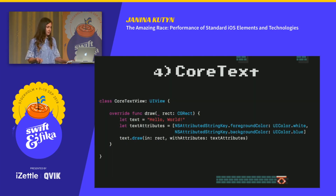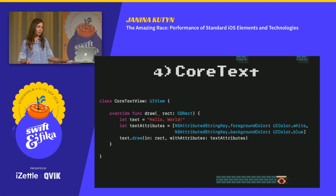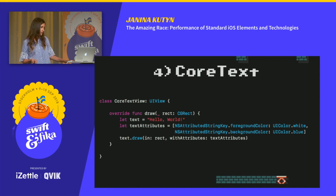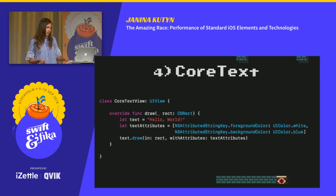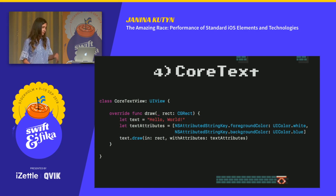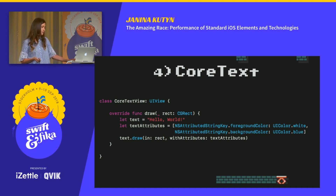Then we have Core Text, which is a framework that operates on top of Core Graphics. It's less user-friendly than CA layer and UILabel, and you have to do a lot more things yourself, like text positioning. But on the other hand, it gives you complete control over how text is drawn.